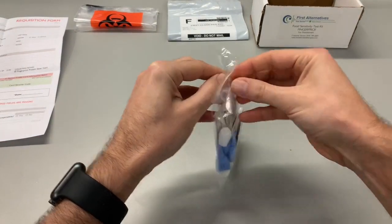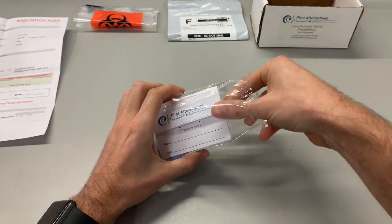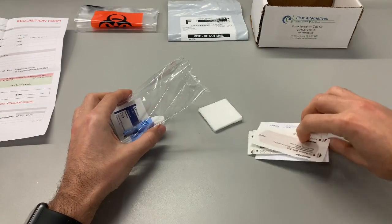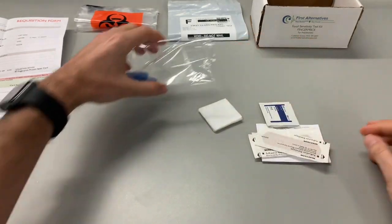Take out the contents of the sealed baggie, which include one protein saver card, three alcohol pads, three gauze pads, three band-aids, and three lancets.